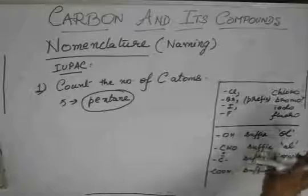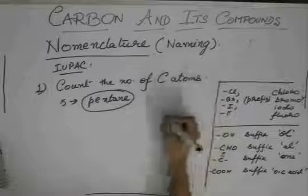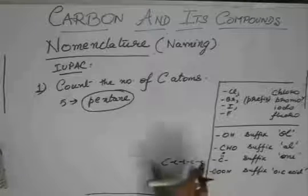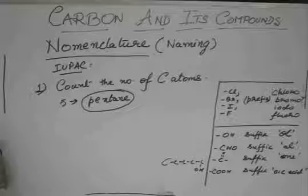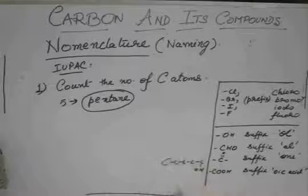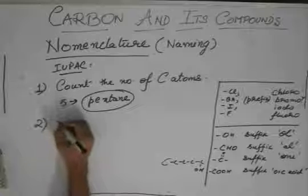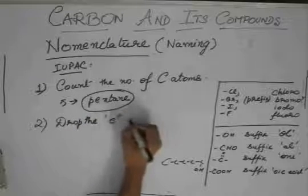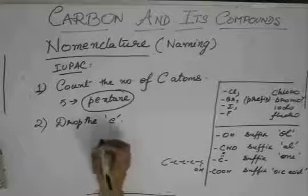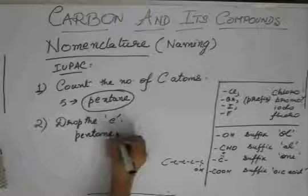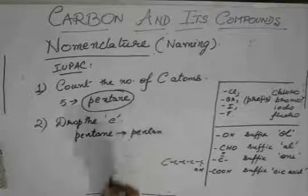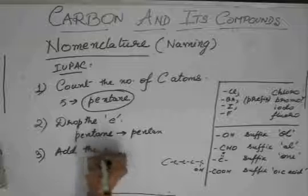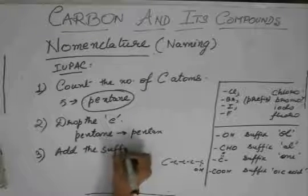Now, how we should use these suffixes? You had this compound. Suppose you are naming this compound. You have already named it pentane since it has five carbon atoms. Now, it has this OH group attached to it. What you do is drop the E of the name. Pentane will become pentan and then add the appropriate suffix.